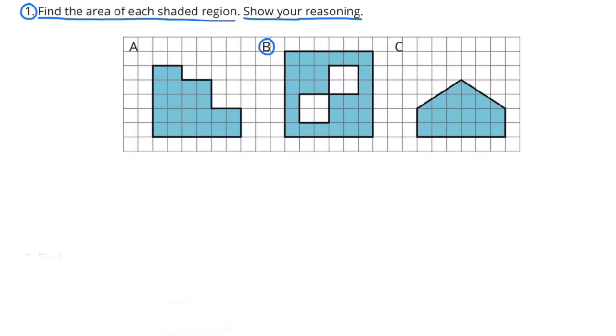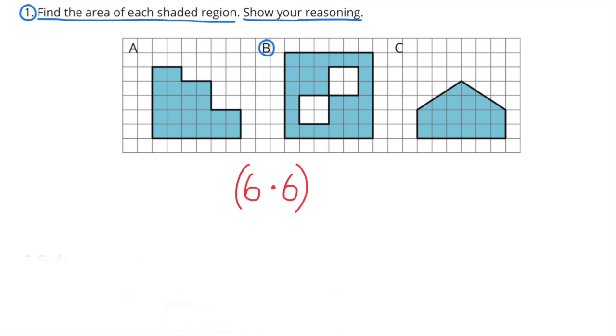B. This shape can be looked at as a square with a side length of 6 and two smaller squares that were removed.